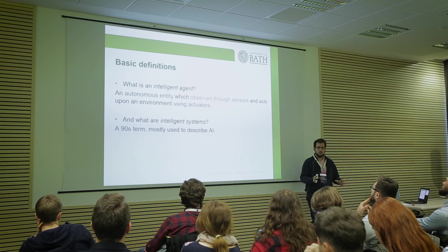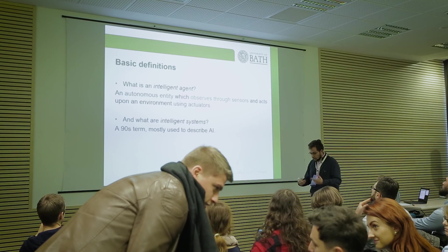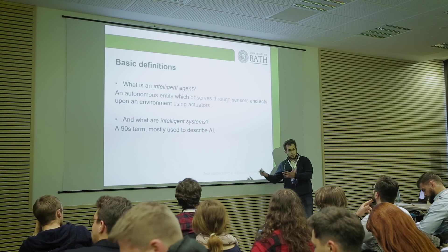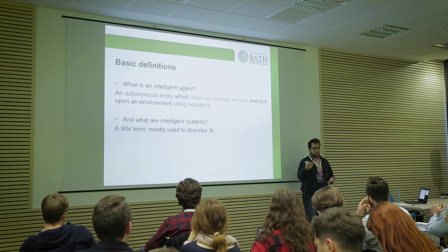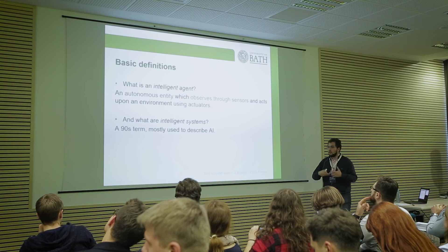I'll be using the term 'agent' a lot. If you don't have an AI background, when we say an intelligent agent, it's any autonomous entity that can observe its environment and act on that environment using actuators. For example, in the chatbot workshop you had earlier this morning, the agent uses sensors — in this case text inputs from the user — and then responds back to the user. That's the action, the output. An agent is any entity that pretty much observes its environment and alters it.